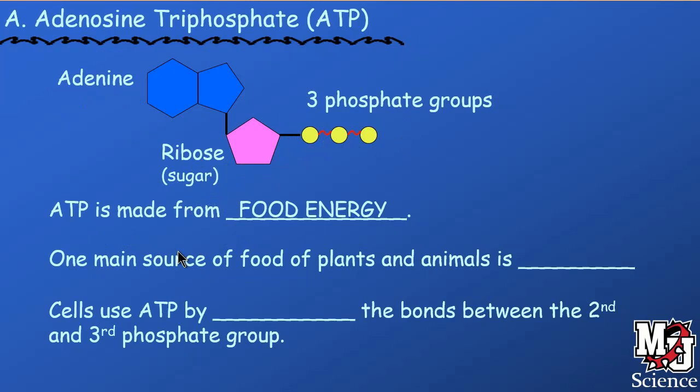ATP is made from the food energy that you consume. Your cells take that food into the mitochondria, and the mitochondria turn the carbohydrates into ATP. The main source of food for plants is glucose, a six-carbon sugar easily broken down from more complex carbohydrates like starches and table sugar. There are other simple sugars that can be used, but glucose is the most important one.